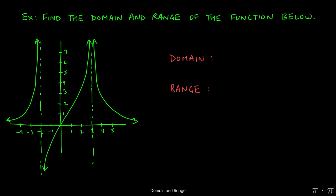Let's look at this next example. We see arrowheads meaning the graph continues to negative infinity on the left and positive infinity on the right, going up and down through the asymptotes. When we start looking for values of x where the function is not defined, we have no issues until we reach negative two. At negative two there is no y value, so our first piece for the domain is from negative infinity to negative two, excluding negative two.